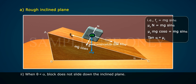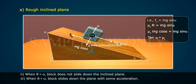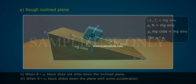2. When θ is less than α, block does not slide down the inclined plane. 3. When θ is greater than α, block slides down the plane with some acceleration.